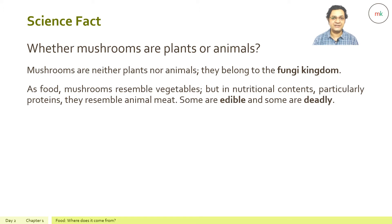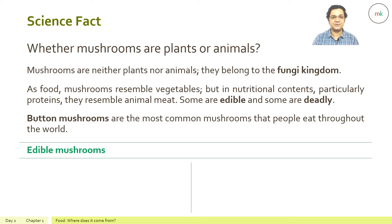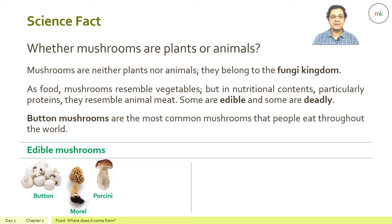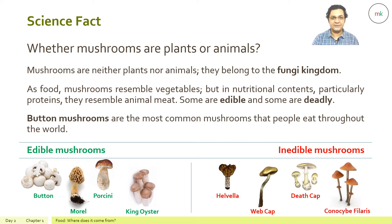As food, mushrooms resemble vegetables, but in nutritional content, particularly proteins, they resemble animal meat. Some are edible and some are deadly. Button mushrooms are the most common mushrooms eaten throughout the world. Edible mushrooms include button, morel, porcini, and king oyster. Inedible ones include Gyromitra, webcap, death cap, and Pholiota.